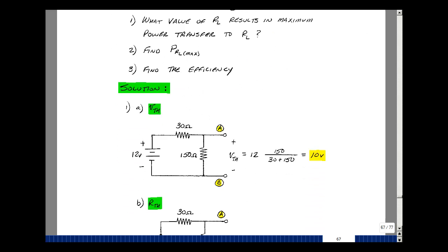So remove the load and find the voltage across the open circuit. Since I have the same current in these two resistances, I can use the voltage divider rule. 150 ohms over 30 plus 150 times 12 is my value of the open circuit voltage or the thevenin voltage, and that turns out to be 10 volts.